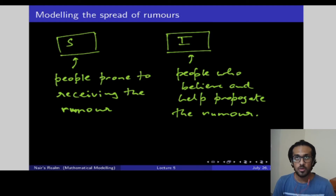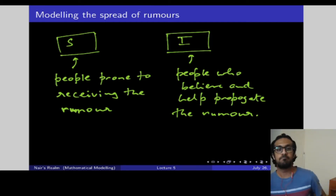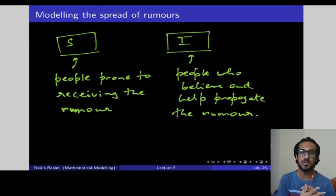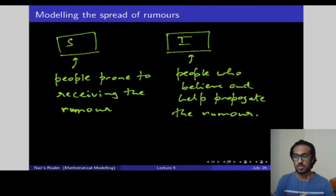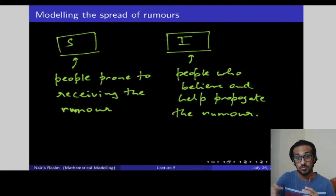When it comes to a rumor spreading, it's not black and white. Not all people who are told a rumor will believe it — only a proportion will. Some will say no, I don't believe you. So it's a very complex thing to model. Using the SI model, we're going to model it on a very basic level with a bunch of assumptions, and as we move forward in this series we will get rid of those assumptions and form a more general model.